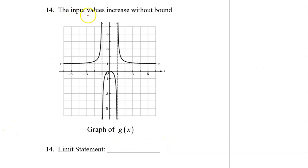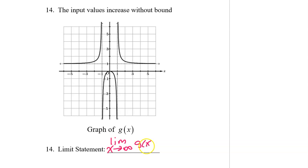Number 14 says the input values increase without bound. So we want the right-end behavior — in other words, the limit as x approaches positive infinity of g of x. On the right-hand side, g of x is approaching the horizontal asymptote of 1. So this limit is equal to 1.